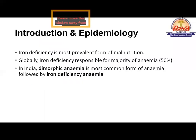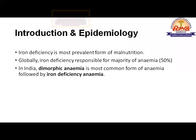Iron deficiency anemia is the most prevalent form of malnutrition — even more prevalent than protein-energy malnutrition. Globally, iron deficiency is responsible for around 50% of all cases of anemia, and in developing countries it may go up to 70%. In India, dimorphic anemia is more common than pure iron deficiency anemia, but otherwise iron deficiency anemia is the most common form of anemia in our setup.